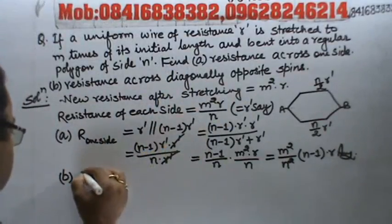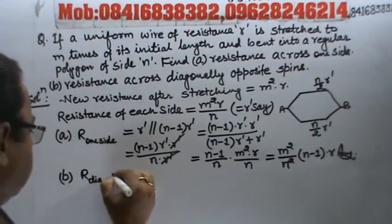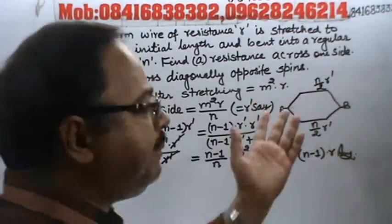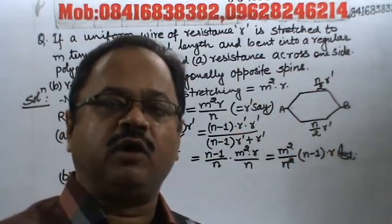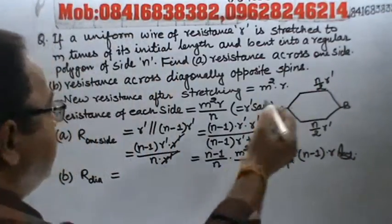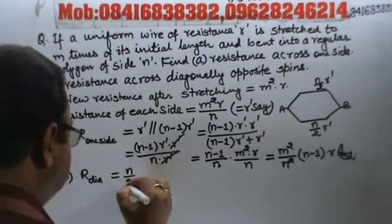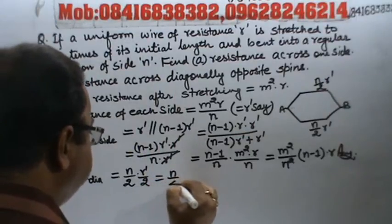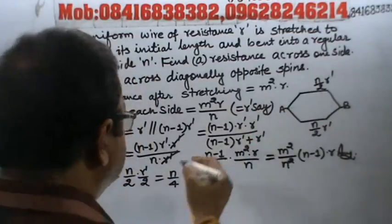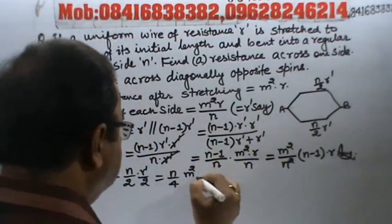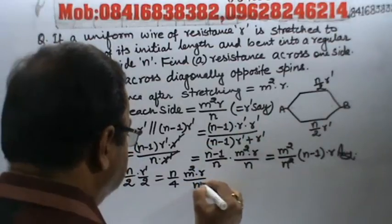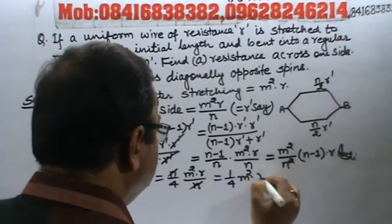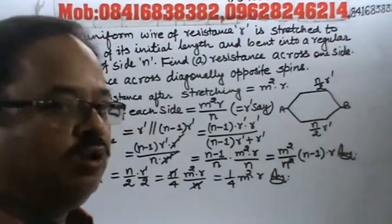Since total n sides, when we divide by half, n by 2 r dash. So basically two equal resistances in parallel, so their resistance diagonally opposite will be half. This will be n by 2 into r dash divided by 2. So this will be n by 4 r dash. And r dash value is m squared R divided by n. So n cancels, this will be 1 by 4 m squared into R. This will be the answer. Okay, thank you.